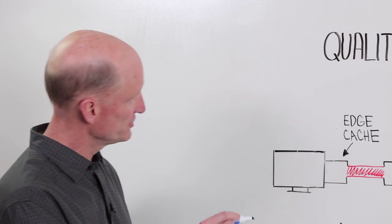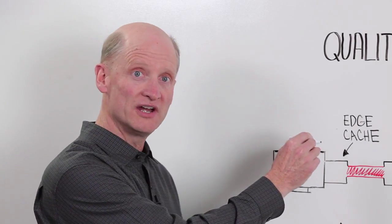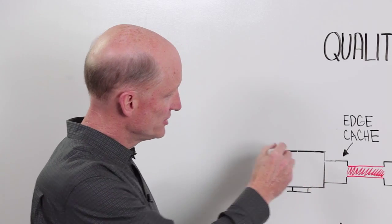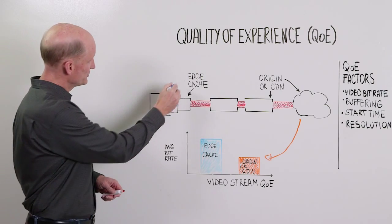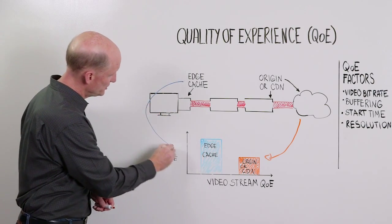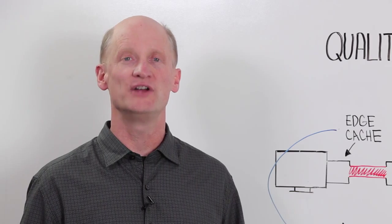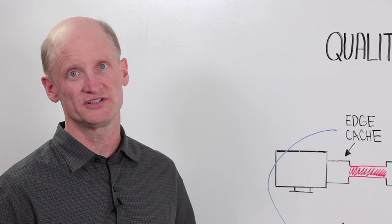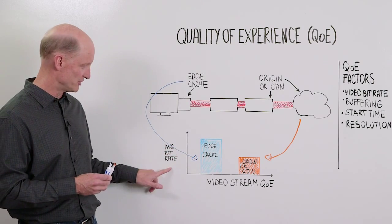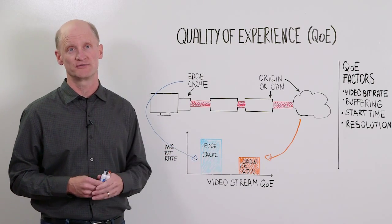In the same way, in the case of edge caching, we can measure the streams that originate from the edge cache and are streamed to the consumer. We can take those measurements and determine the average bit rate associated specifically with edge caching. As you can imagine, edge caching delivers substantially higher QoE, as measured by average bit rate, than traditional content delivery methods.